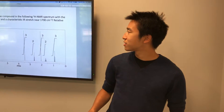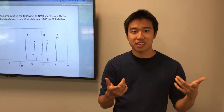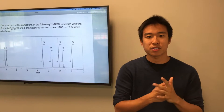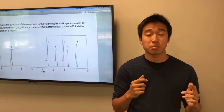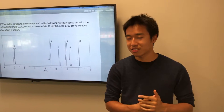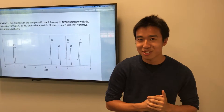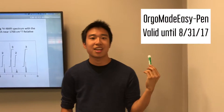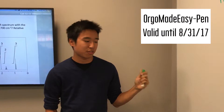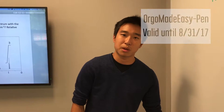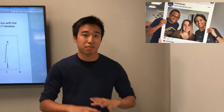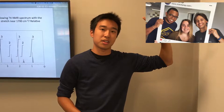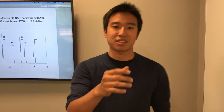Alright, hey guys. So real quickly, as you hopefully got the NMR, there are two possible answers and we're going to go through both of them. But first, if any of you guys are looking for the Clutch Prep promo code, it is orgomadeeasy-pen. You can get 20% off Clutch if you're looking for some prep. They have a massive video library — if you want more info on Clutch Prep, you can click on the cards right here.